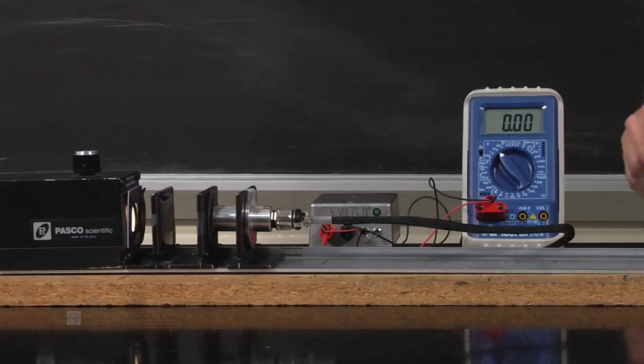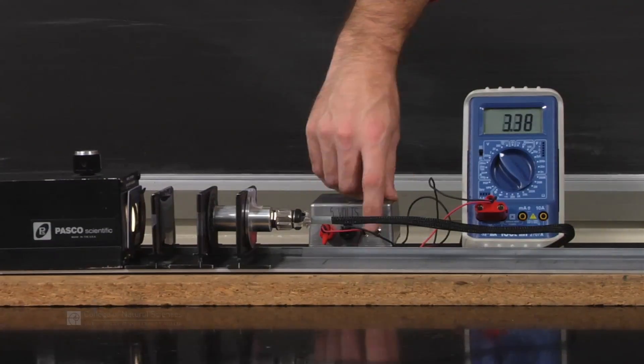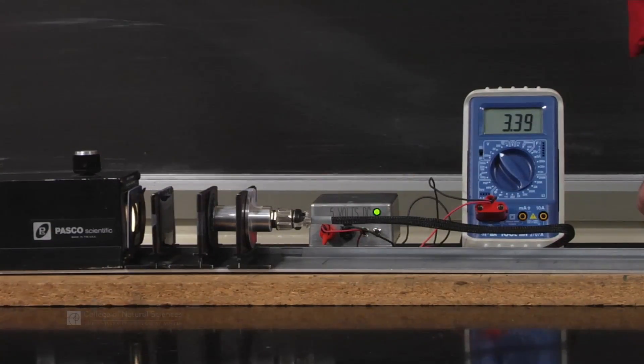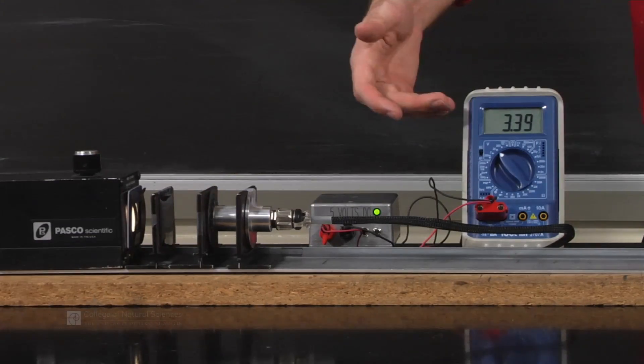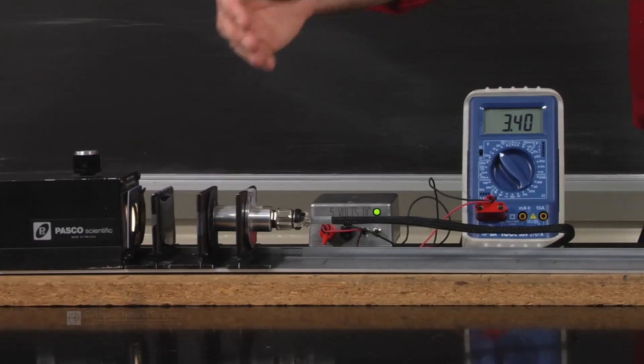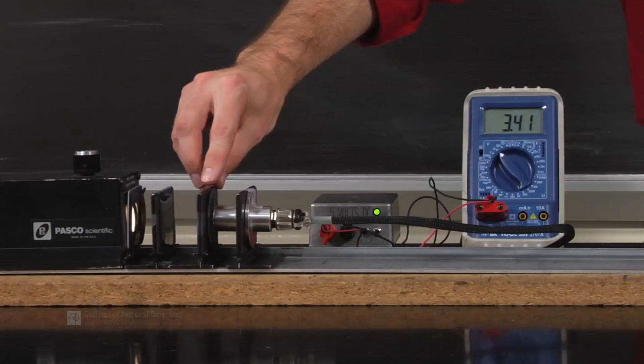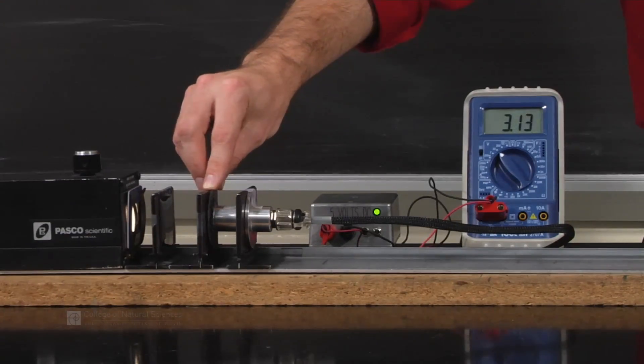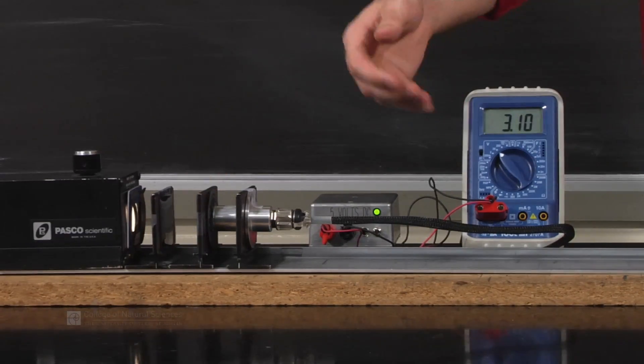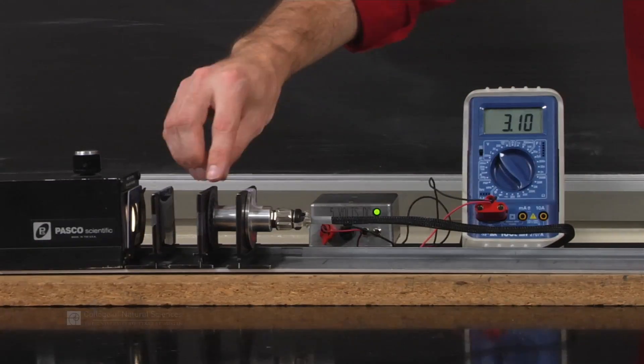So once we have everything set up we can go ahead, turn our detector on, and we'll see that the multimeter reads hopefully a little bit under five volts. So what we're going to do is record the value for our zero degree which we originally set. Move it by 10 degrees, now it's at 10 degrees, we write down the new reading.